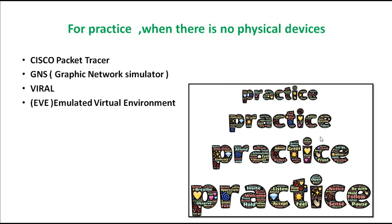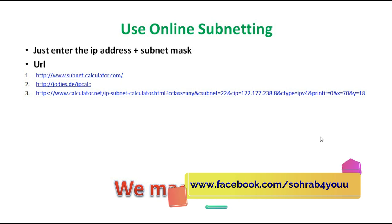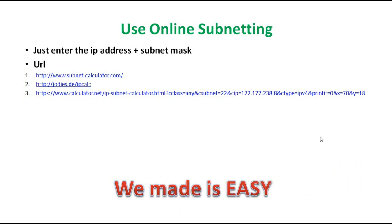Sometimes there are online websites that do subnetting for you. If your time is short or you face mathematical subnetting questions, these websites help. You just go to the website, put in your IP address and subnet mask, press enter, and it will find everything — the network address, first valid host, last valid host, broadcast address, and everything.